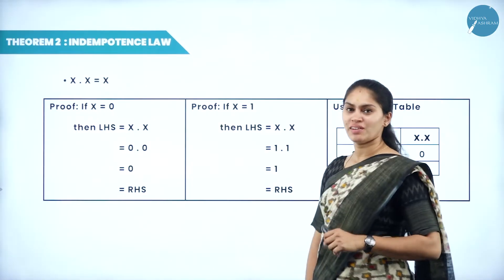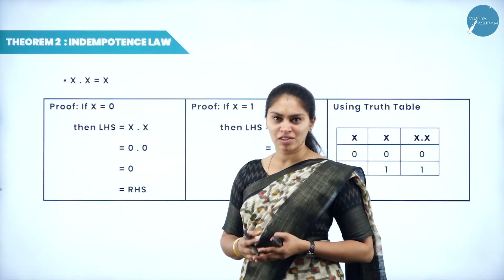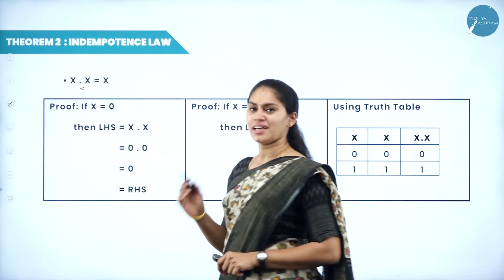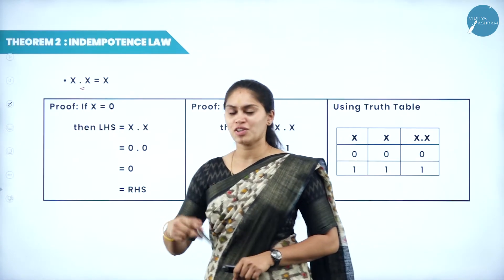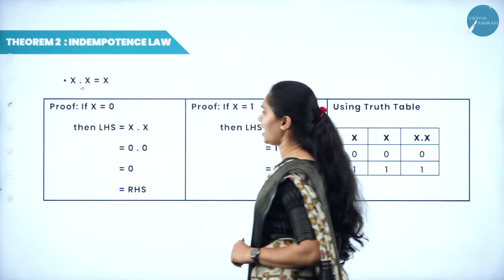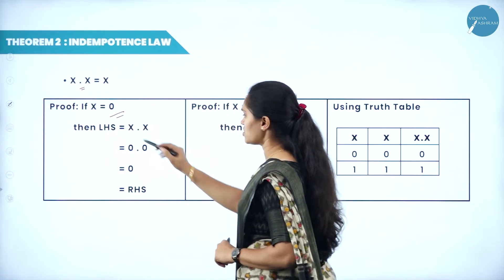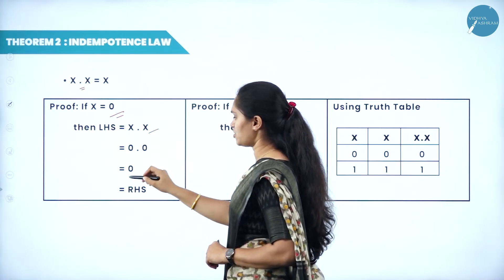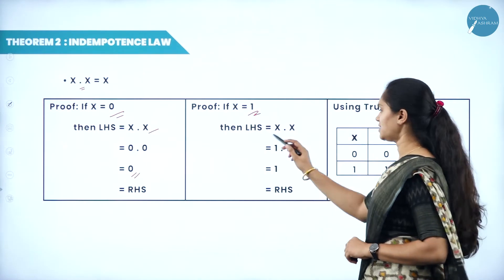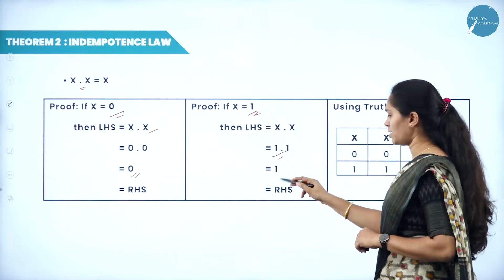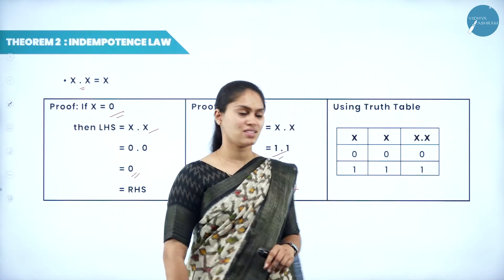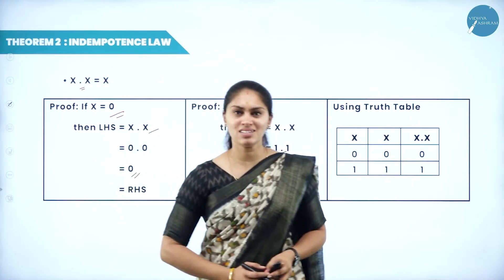Now for the Idempotence law with the AND operator: x dot x equals x. When x equals 0, 0 into 0 equals 0; when x equals 1, 1 into 1 equals 1. We have proved LHS equals RHS in both cases. The truth table confirms this. This is the Idempotence law — both the definition and the proof by induction are important.